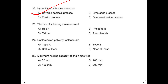The flux used for soldering is phosphoric. Next question: unplasticized polyvinyl chloride (UPVC) — options are R type, A type, B type, both of these, none of these. UPVC has two types.